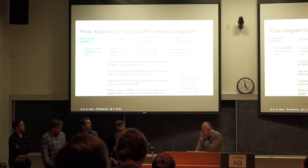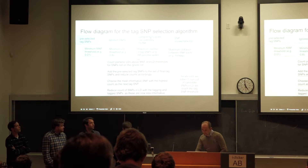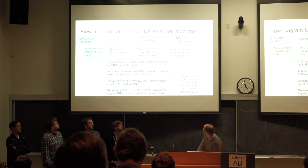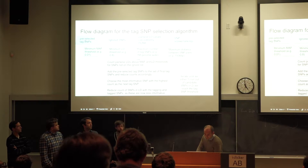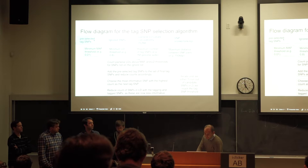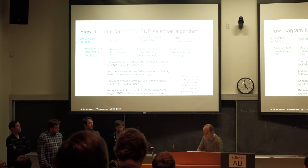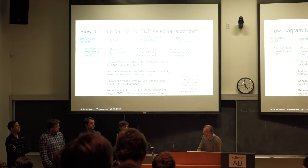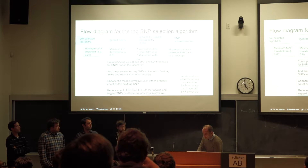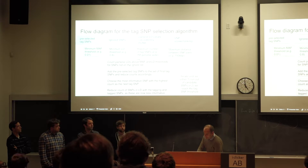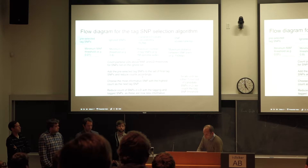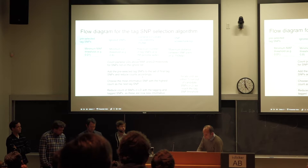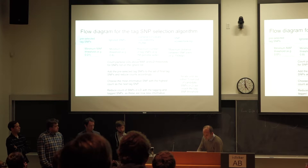The mandatory input to the algorithm is the LD values. We also made the algorithm accept a set of pre-selected tag SNPs and a set of SNPs. We didn't have time to include SNP scores as an input. The algorithm first counts the pairwise LD values for the SNPs, then adds in the pre-selected tag SNPs and updates the counts accordingly.